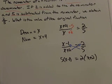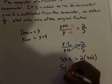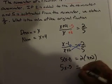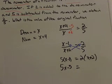Now I'm going to distribute, so that's five x minus five is equal to two x plus four.